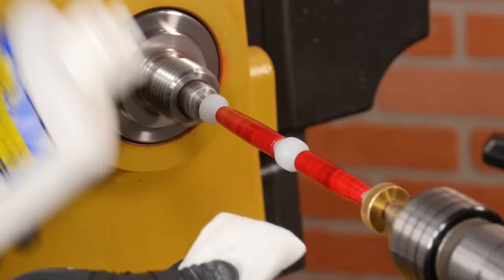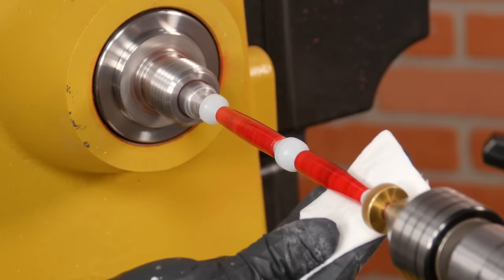Once you've sanded through 12,000 grit, add a small amount of hot plastic polish to a soft cloth and gently apply it to the blanks for a beautiful shine.